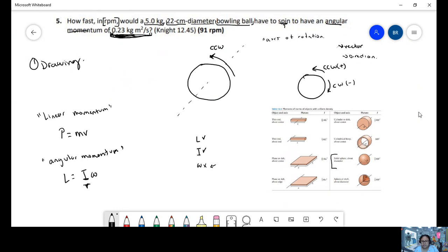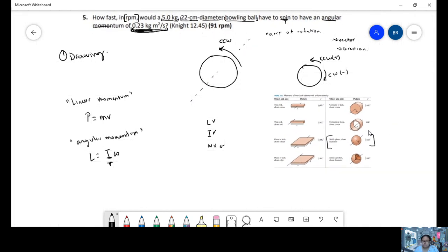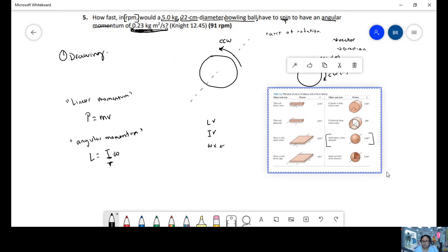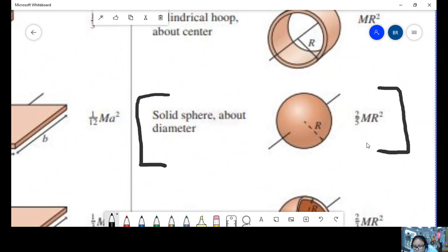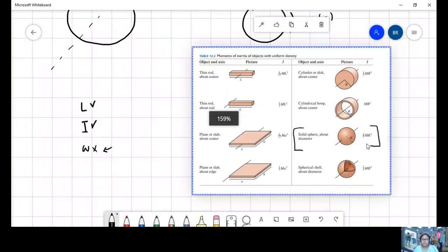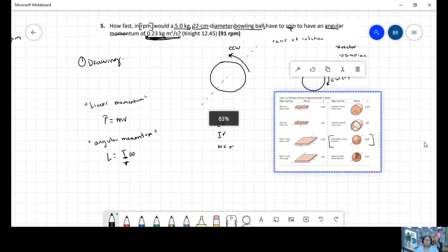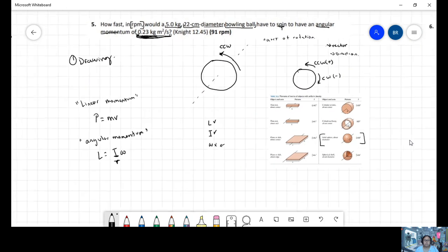So a sphere with the axis above the diameter. Our formula is two-fifths mass times radius.